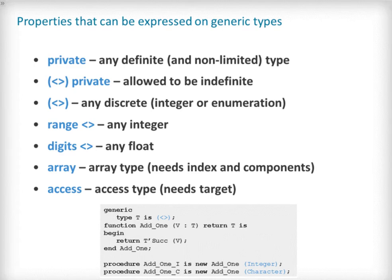The code snippet at the bottom of this slide shows an example of a generic function that can be instantiated with any discrete type, for example an integer or a character. You may notice I have skipped over array types in this list — this requires a specific slide which will follow.